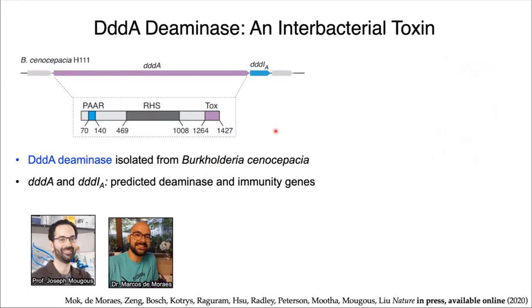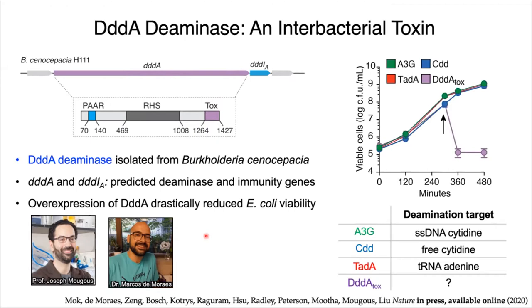Over at the University of Washington, Professor Joseph Mogas and Dr. Marcos de Morias isolated a previously uncharacterized bacterial toxin from the pathogen Burkholderia synocypatia. This toxin was predicted to be a deaminase protein, which they refer to as DddA, and DddI is its downstream antitoxin immunity protein. When the team overexpressed DddA in E. coli, they found that DddA drastically reduced the viability of the E. coli cells, whereas deaminases that target single-stranded DNA cytidines or tRNA adenines had little impact on viability.